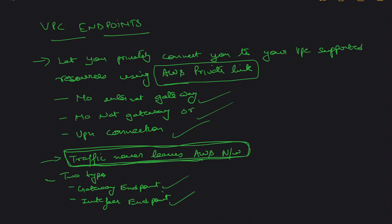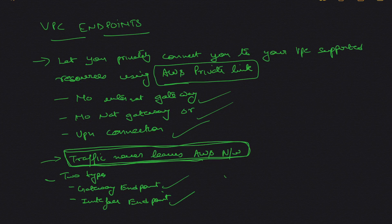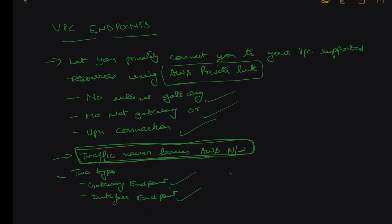When using a gateway endpoint you cannot consume services outside your VPC, but with interface VPC endpoints you can, using VPC endpoint services. Since AWS didn't have a network load balancer when they launched endpoints for DynamoDB and S3, there were no interface endpoints at that time. Now that the technology exists, gateway endpoints are no longer the default approach — but AWS kept the two gateway endpoints for DynamoDB and S3. All other services use interface endpoints.